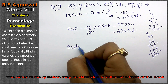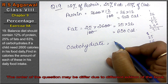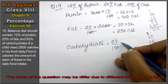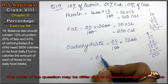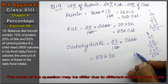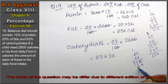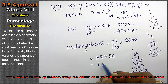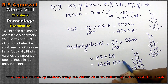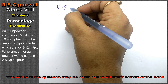Now let's find the quantity of carbohydrates. Carbohydrate was 63% of total calories, that is 63% of 2600. Dividing 2600 by 100 gives 26, so 63 into 26. Calculating: 63 into 26 equals 1638 calories. So carbohydrate is 1638 calories.